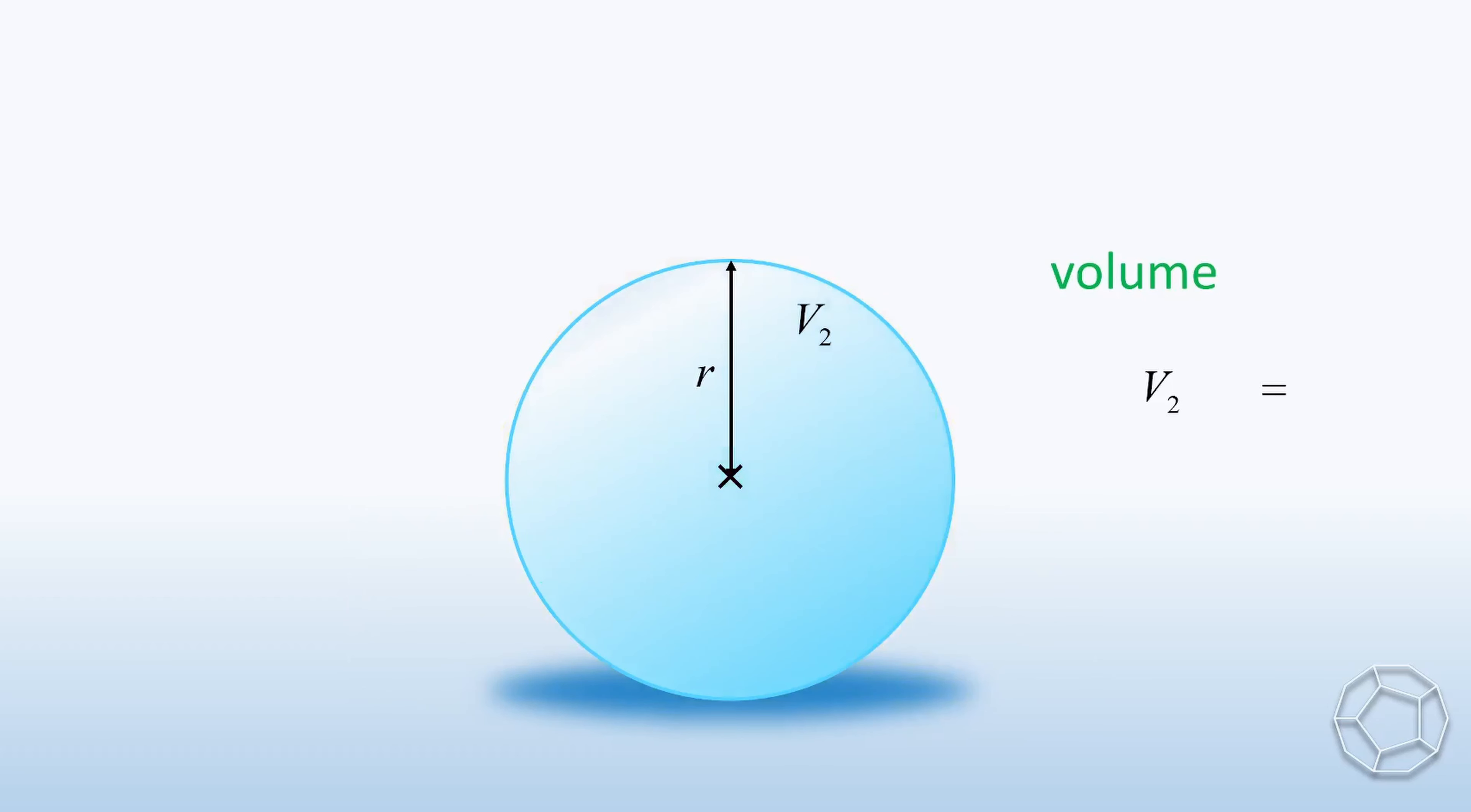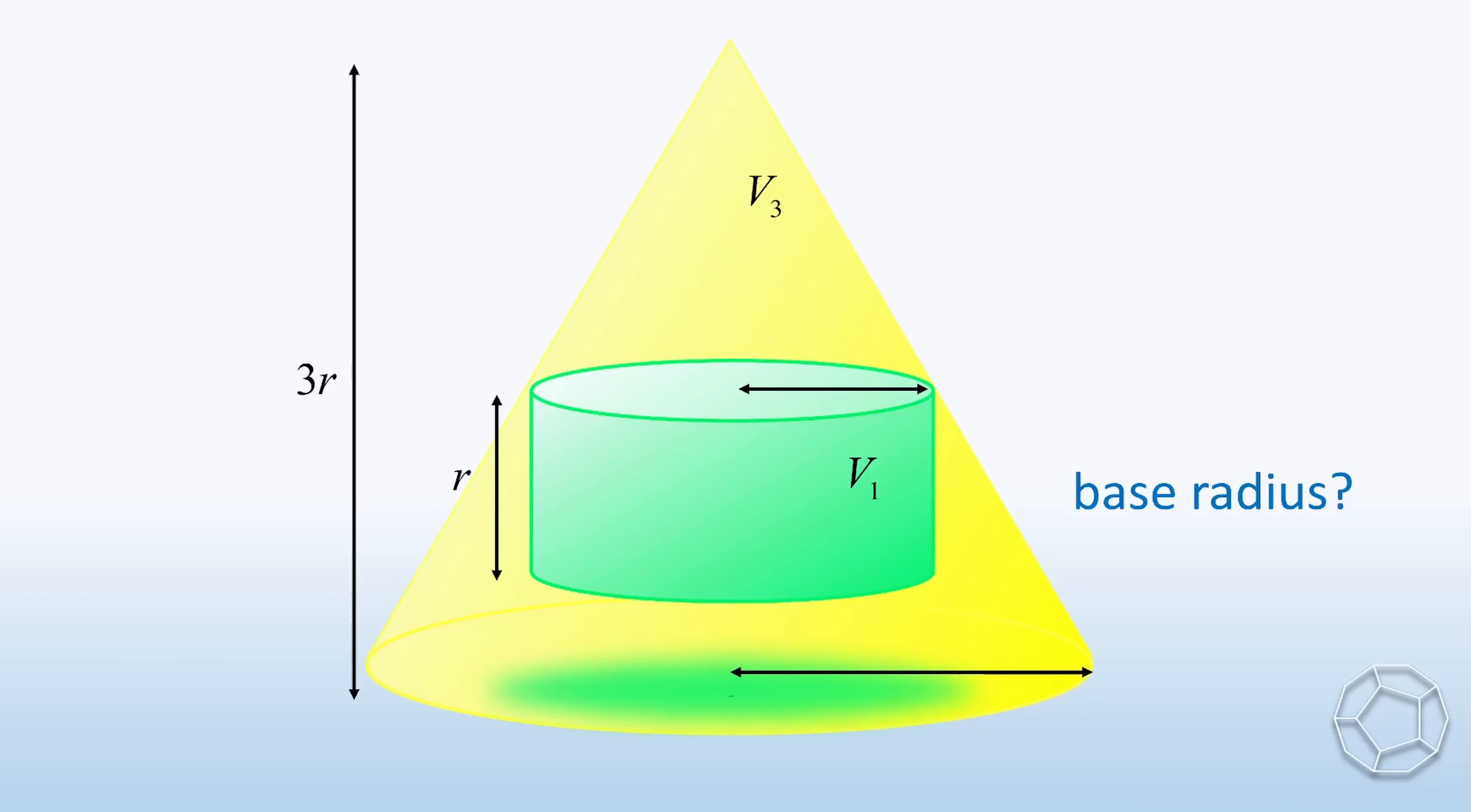Recall the formula of volume of a sphere: v2 is equal to 4 over 3 pi r cubed. Let's look at the cylinder and the cone. Because the height of the two shapes are given, we're going to express their base radii in terms of r. For the calculations, let's start with the sphere and the cylinder.